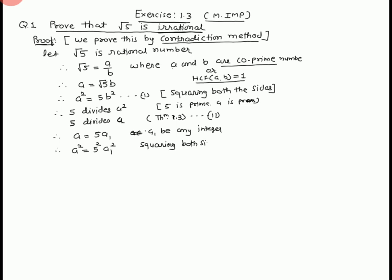We write squaring both sides. We put the value of a² from equation 1, so 5b² equals 5 square a₁ square. We write from equation 1. 5 is cancelled.